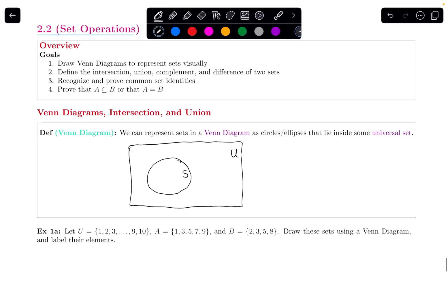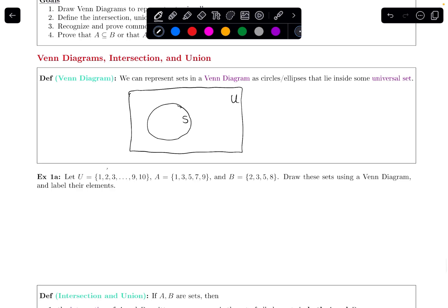So let's do an example. Let U be the set that consists of the integers 1, 2, 3, up until 10. A is this set that has 1, 3, 5, 7, and 9. B is the set that has 2, 3, 5, and 8 in it. I'm going to draw these sets using a Venn diagram and label their elements.